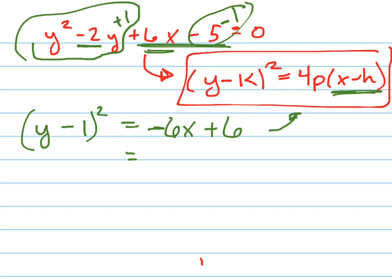I get it by itself by factoring out a negative 6. When I factor out the negative 6, I get x minus 1. So I've got y minus 1 squared equals negative 6 times x minus 1.